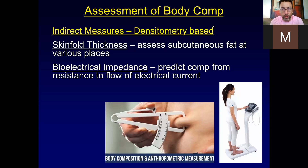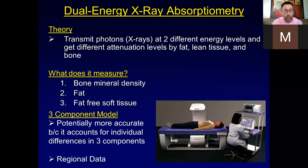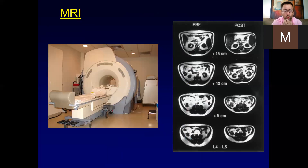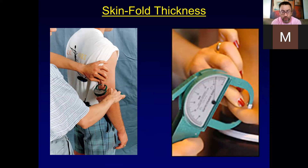We're picking up from Friday where we were talking about how to measure body composition using skin folds and bioelectrical impedance. We pinch and pull the skin away, measure the thickness of subcutaneous fat, use that to estimate body density, and then use body density to estimate percent body composition.